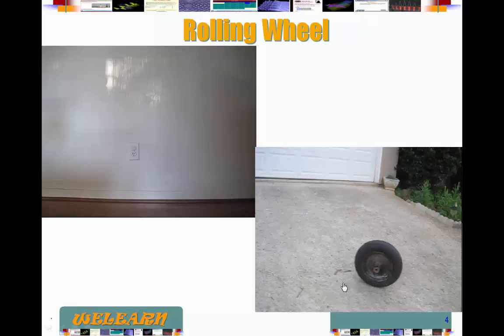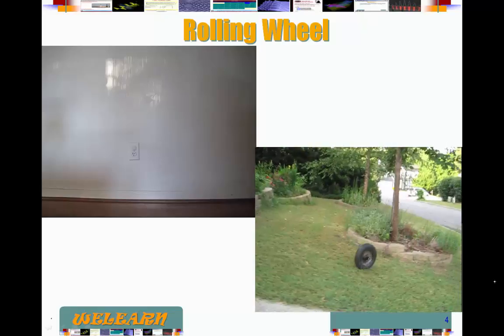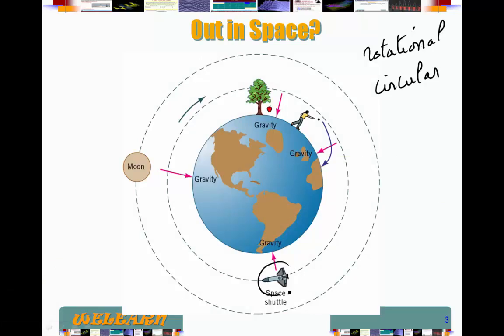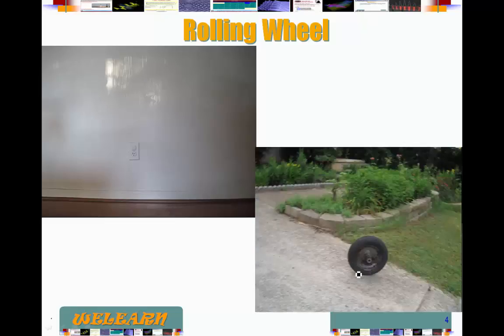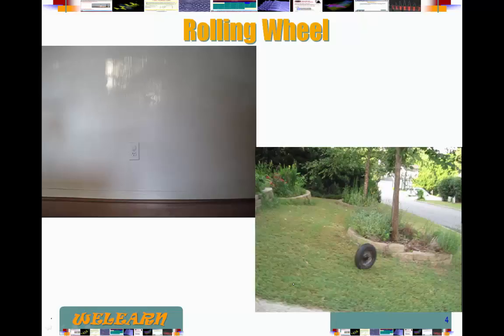But then also it was moving. In the case of the satellite, it was rotating by moving in a circle. Now the wheel, it was rotating by spinning about its center. That's different from the actual motion that it has along this path.